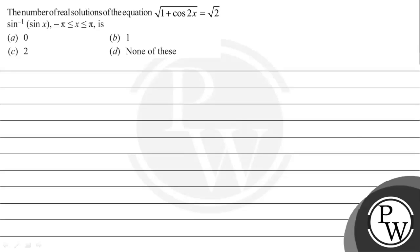Hello, let's read the given question. The question states that the number of real solutions of the equation √(1 + cos 2x) = √2 sin⁻¹(sin x), where x is from -5 to π, and the options are given below.